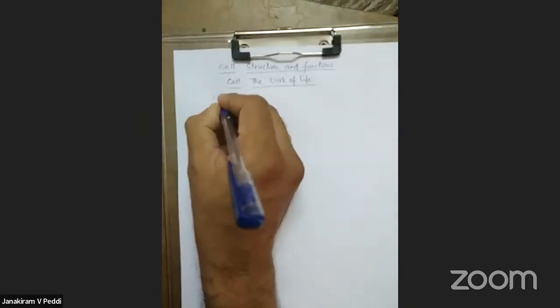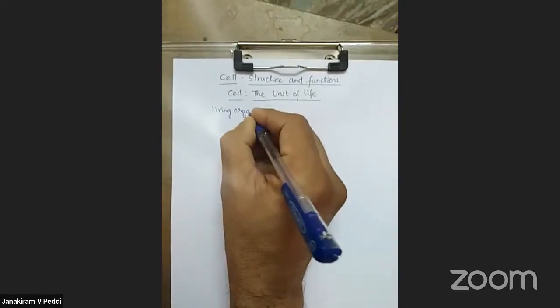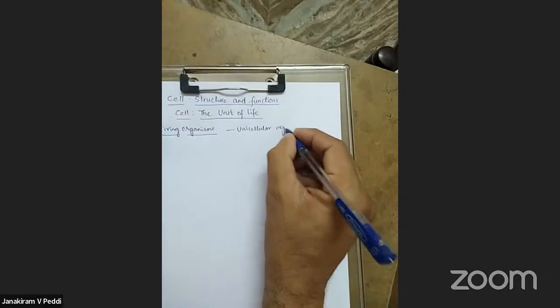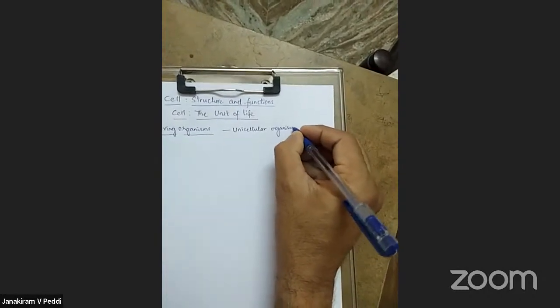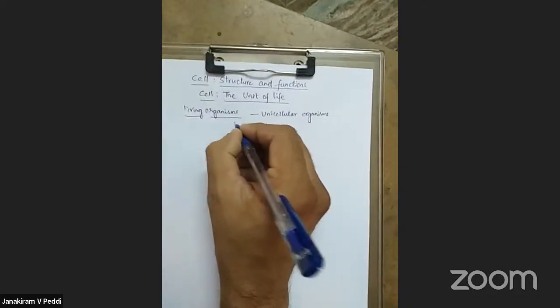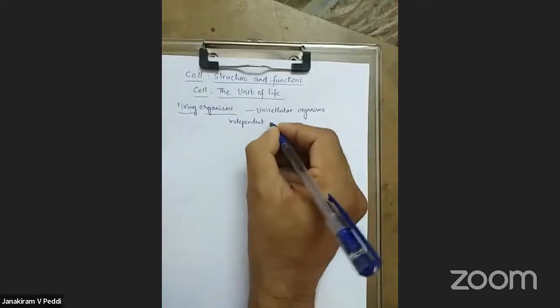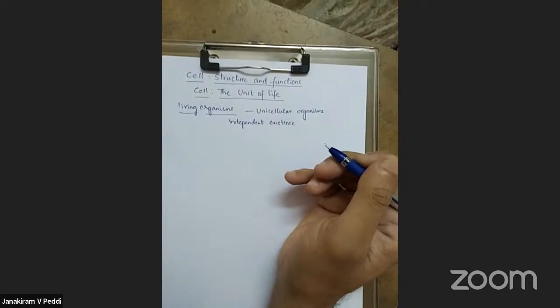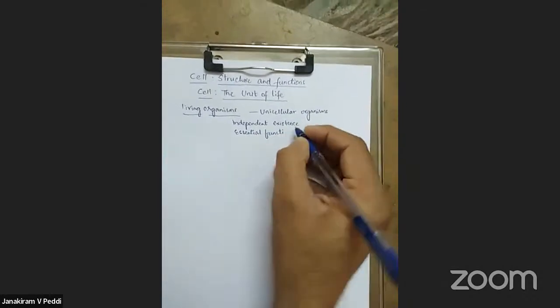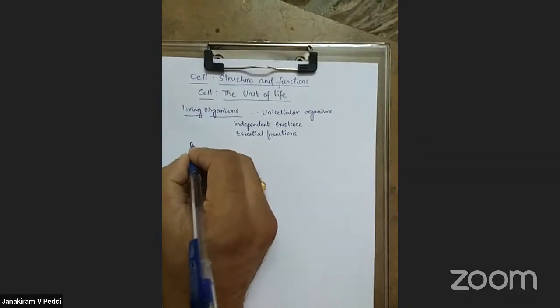As we know, there are different types of living organisms with a lot of diversity. Some are made up of only one cell — those are called unicellular organisms. Organisms which evolved earlier are mostly unicellular, and despite having only one cell, that organism performs all the essential functions and has independent existence.